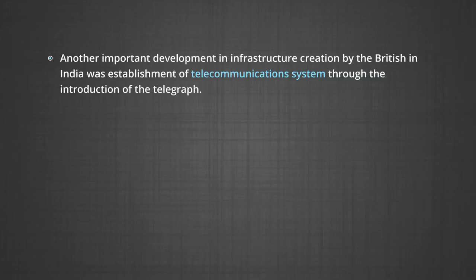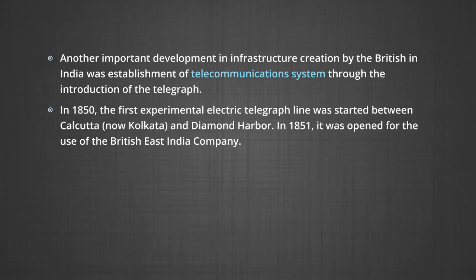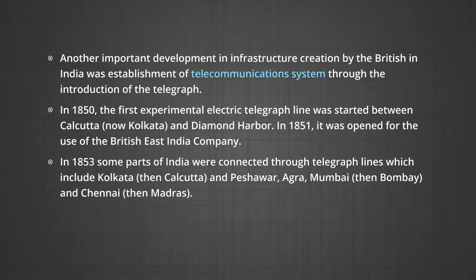Another important development in infrastructure creation by the British in India was the establishment of a telecommunication system through the introduction of the telegraph. In 1850, the first experimental electric telegraph line was started between Calcutta (now Kolkata) and Diamond Harbour. In 1851, it was opened for use by the British East India Company. In 1853, some parts of India were connected through telegraph lines, including Kolkata, Peshawar, Agra, Mumbai (then Bombay), and Chennai (then Madras).